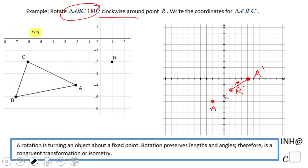A prime is at 4 and 0. Now moving to point B, which is at negative 7, negative 5. Counting: 1, 2, 3, 4, 5, 6, 7 — that's 8 units left and 3 units down.